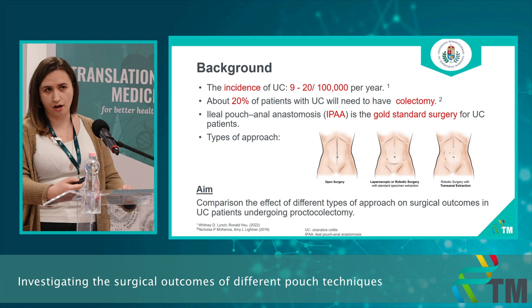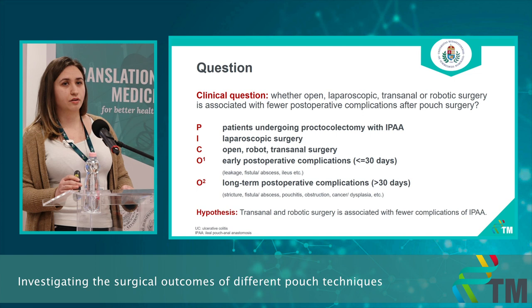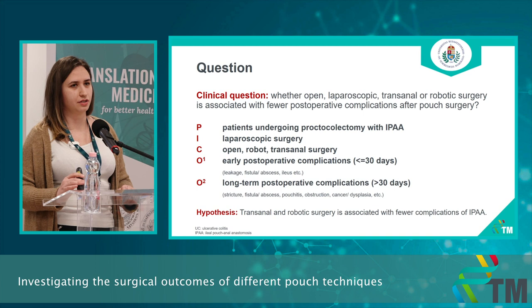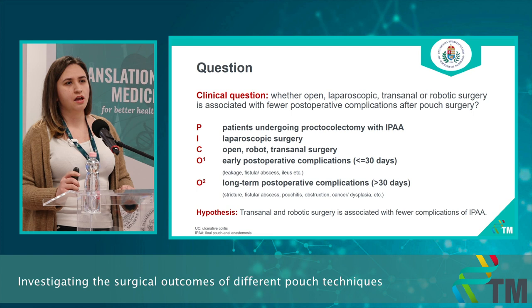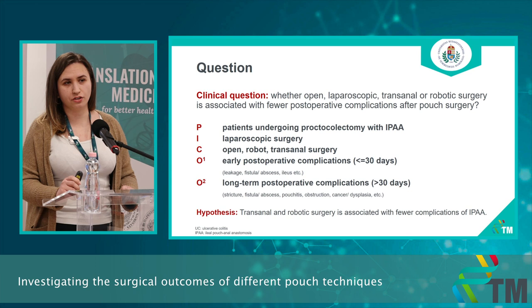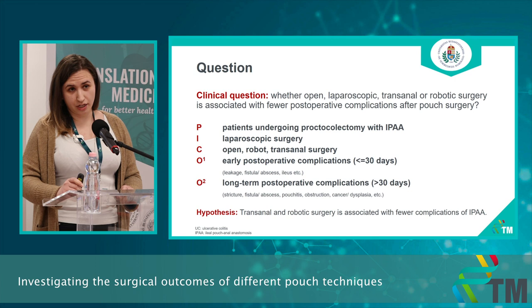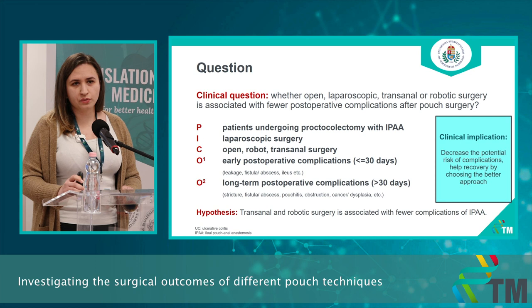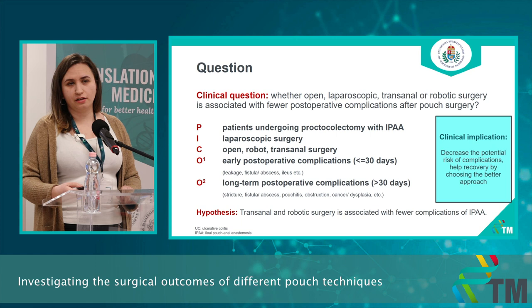Our aim is to compare the effect of different types of approaches on surgical outcomes. We asked whether open, laparoscopic, transanal, or robotic surgery is associated with fewer postoperative complications after pouch surgery. Using the PICO framework, the population was patients undergoing proctocolectomy with pouch-anal anastomosis. We compared laparoscopic surgery with open, robotic, and transanal approaches, focusing on early and late postoperative complications. We hypothesized that transanal and robotic surgery is associated with fewer complications, as choosing a better approach can decrease the risk of complications and aid recovery.